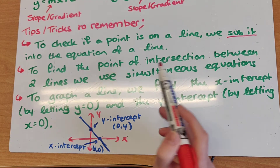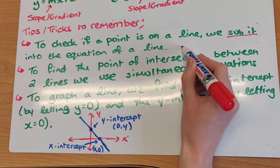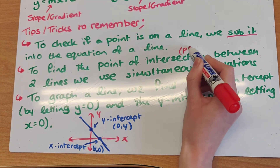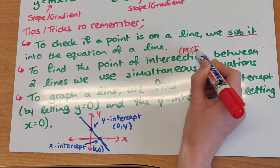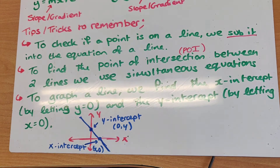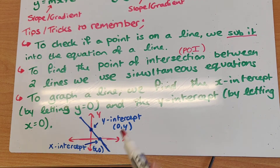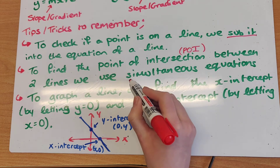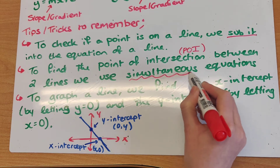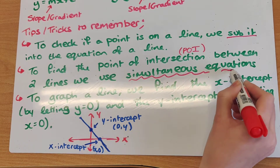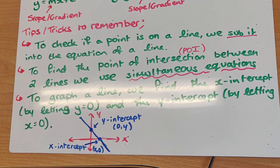If we want to find the point of intersection — or as we'd remember from the junior cert, the POI — the point of intersection between two lines, we use a piece of algebra called simultaneous equations.